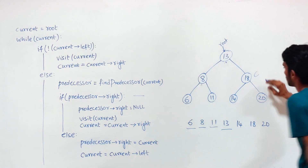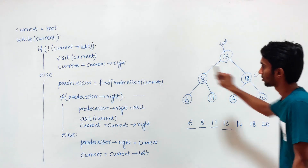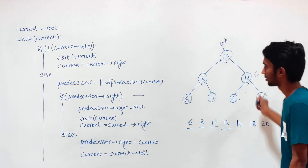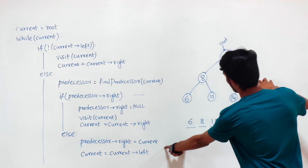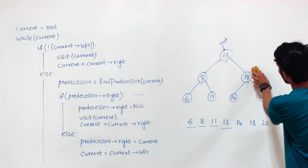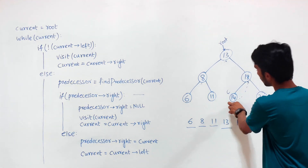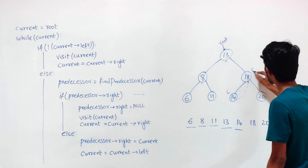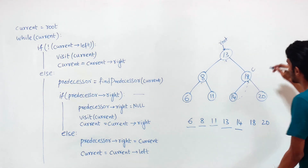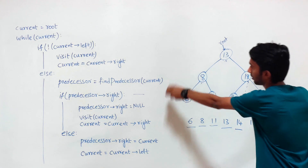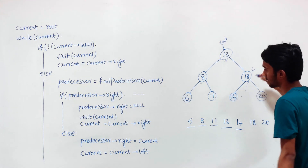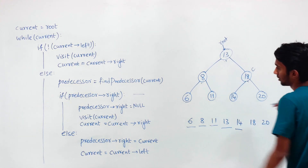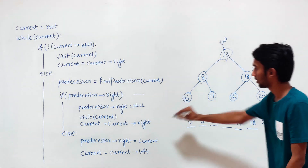Current goes to 18. When we are at 18, we have a left subtree, so we find the predecessor and point it to the current node, then move current to the left. When we are at 14 with no left subtree, we visit 14 and go to the right node, which is 18. Coming back to 18, the predecessor's right exists again, so we remove the link, visit 18, and go to the right subtree.